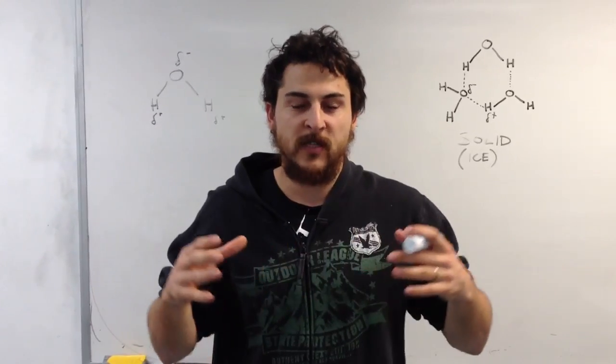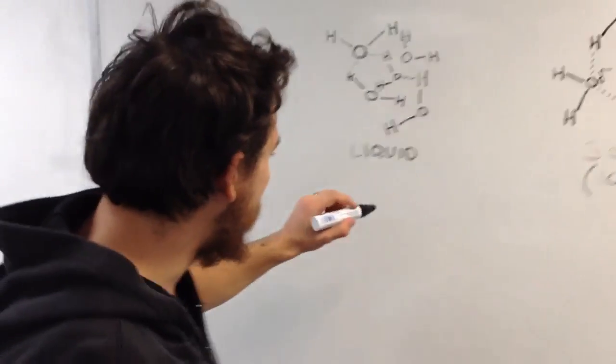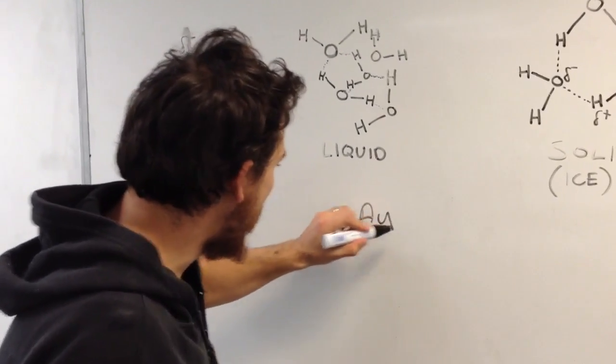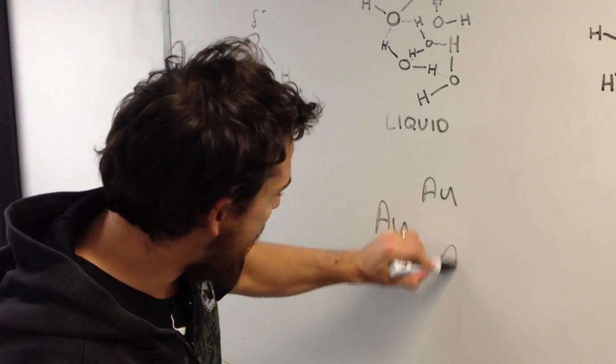We go back to the board here. We've got our gold, which is AU. That's a symbol for gold. You're going to have lots of these gold molecules running around in the liquid and they move around here and there.